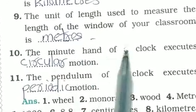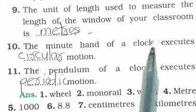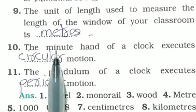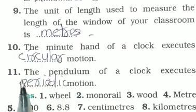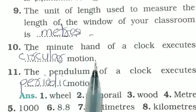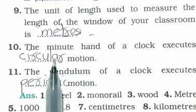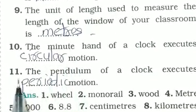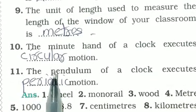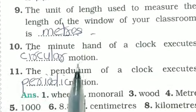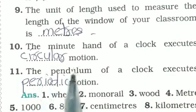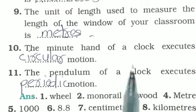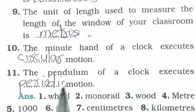Number 9: The unit of length used to measure the length of the window of your classroom is meters. Number 10: The minute hand of a clock executes circular motion — it goes around and around, so it is circular motion. Number 11: The pendulum of a clock executes periodic motion.